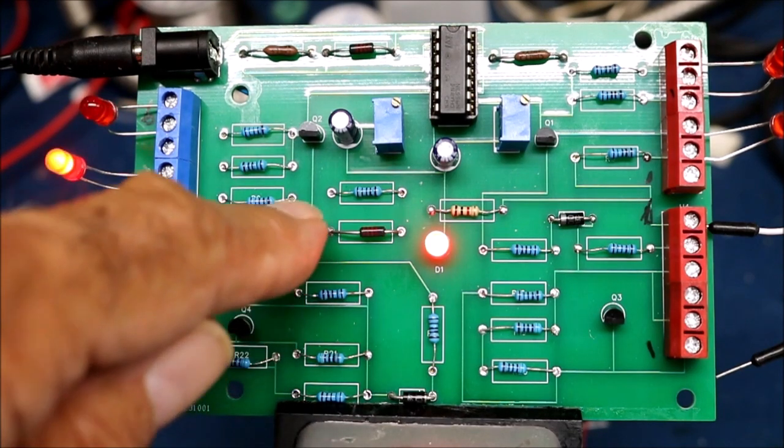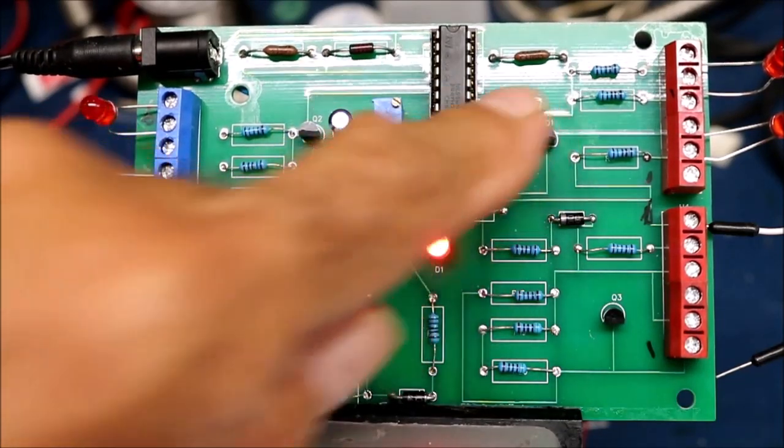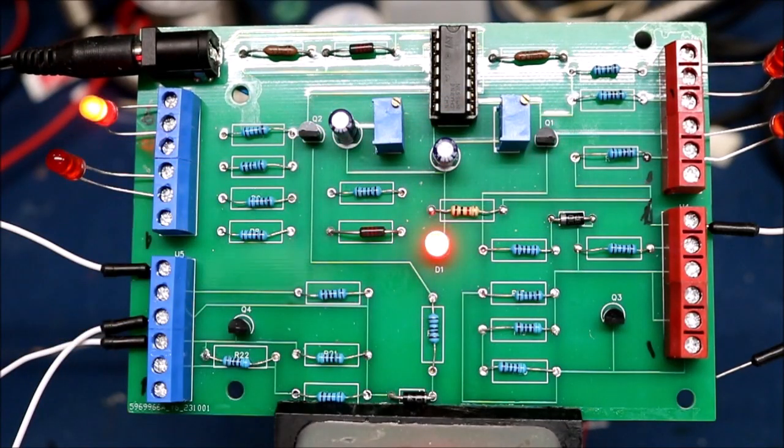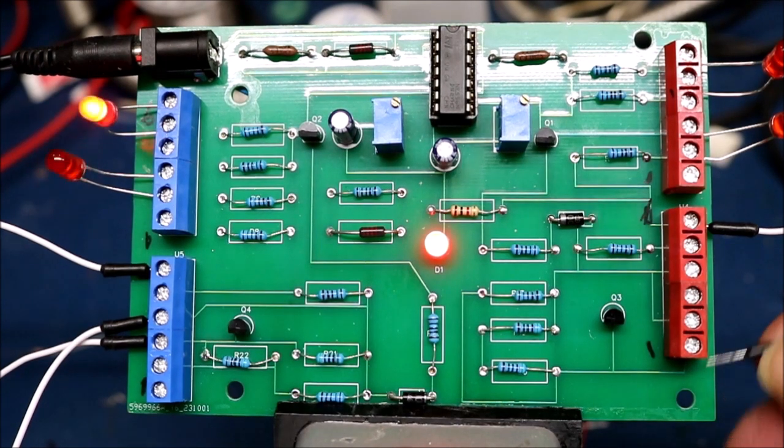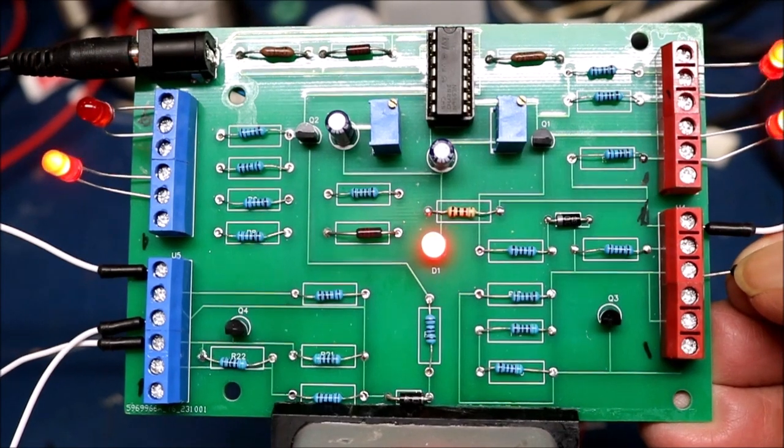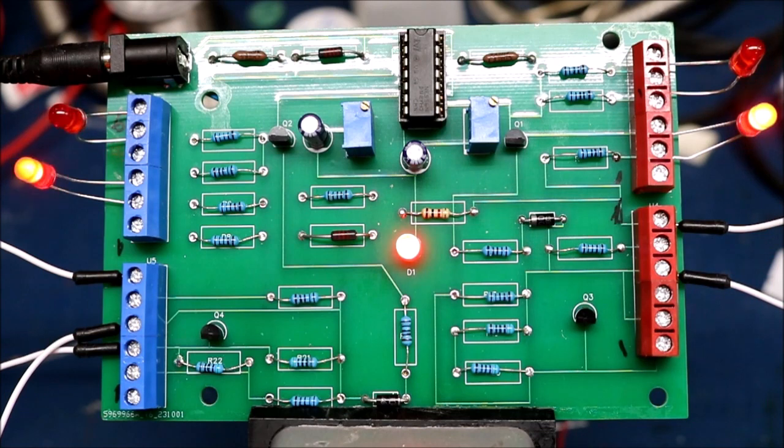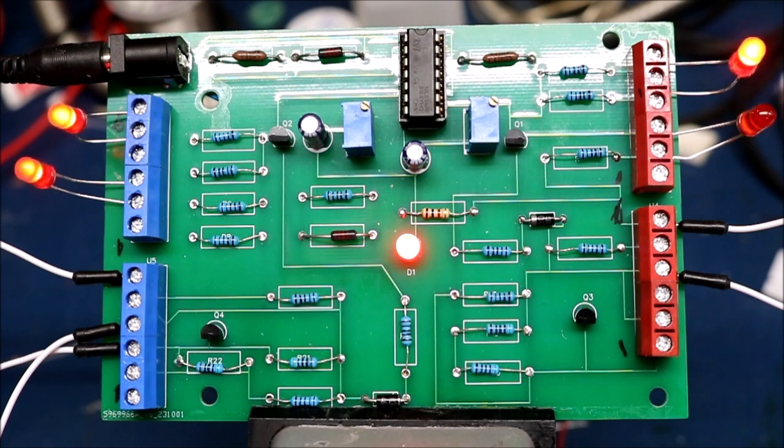Now these potentiometers, these pots here on both sides allow you to adjust the flashing rate. The one on the right, the right channel I have adjusted up much faster so you can use it for an ambulance or a fire truck or something like that.